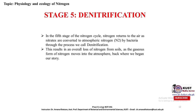Stage five is denitrification — the reverse of nitrification. In nitrification, ammonium was converted into nitrites and then nitrates. In denitrification, nitrates are converted back into atmospheric nitrogen by bacteria. This represents the overall loss of nitrogen from the soil, as nitrogen returns to the atmosphere where the cycle began.